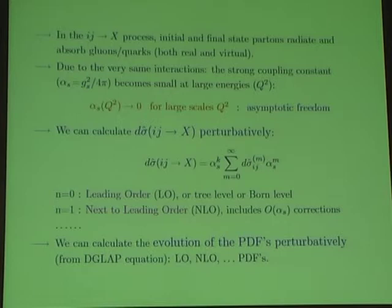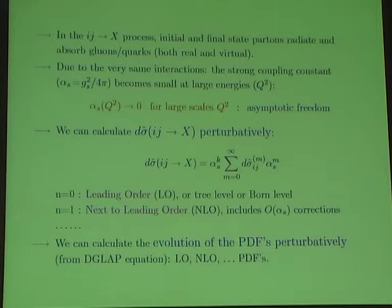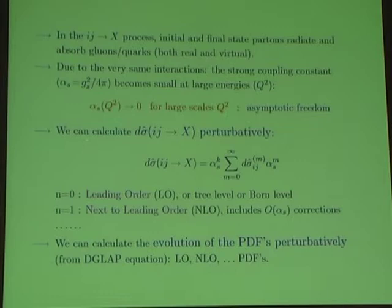The partonic cross-section — for parton i and j producing final state X — is complicated by both initial and final state radiation. This radiation can be both real and virtual: particles that are emitted and reabsorbed, or particles that remain as real emissions. QCD itself at high energy gives us the answer, because the coupling becomes small at large energies and the perturbative approach is justified.